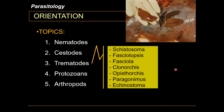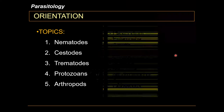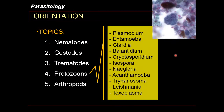It is also worth knowing that most of these trematodes are actually foodborne diseases. There is a subclassification called foodborne trematodes, or FBTs, which includes almost all of the trematodes listed — except for Schistosoma. Schistosoma is not a foodborne trematode.